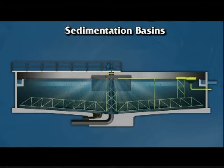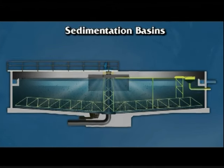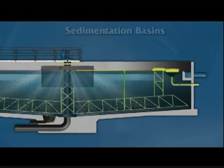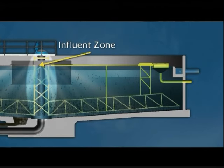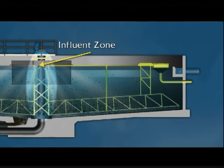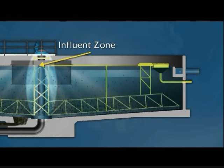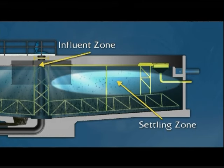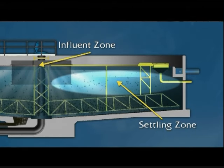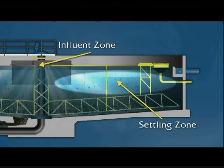Traditional sedimentation basins have four zones. One, the influent or inlet zone decreases the velocity of the incoming water and distributes the flow evenly across the basin. Two, the settling zone provides the calm area necessary for the suspended material to settle.